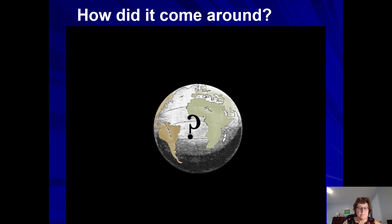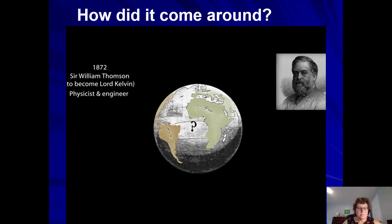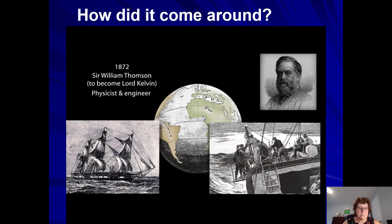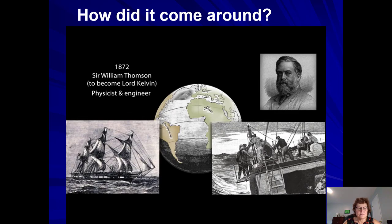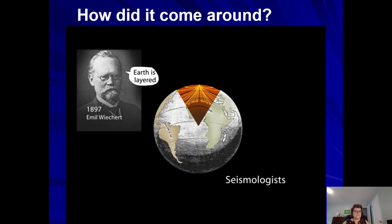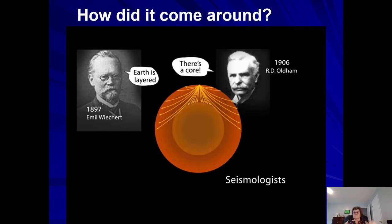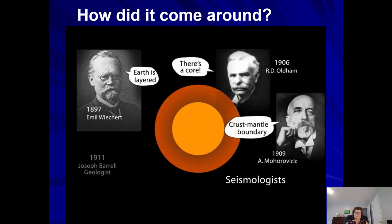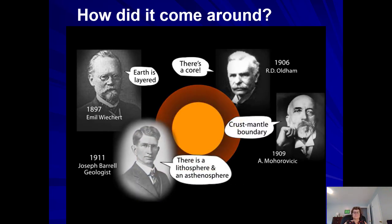No one, however, could explain how the continents moved. Bathometric surveys in the following decades unveiled an extensive submarine mountain ridge between the continents. Meanwhile, seismic data began to reveal Earth's layers. A core, a crust mantle boundary, and a thick outer layer called the lithosphere that lay above a less dense asthenosphere.